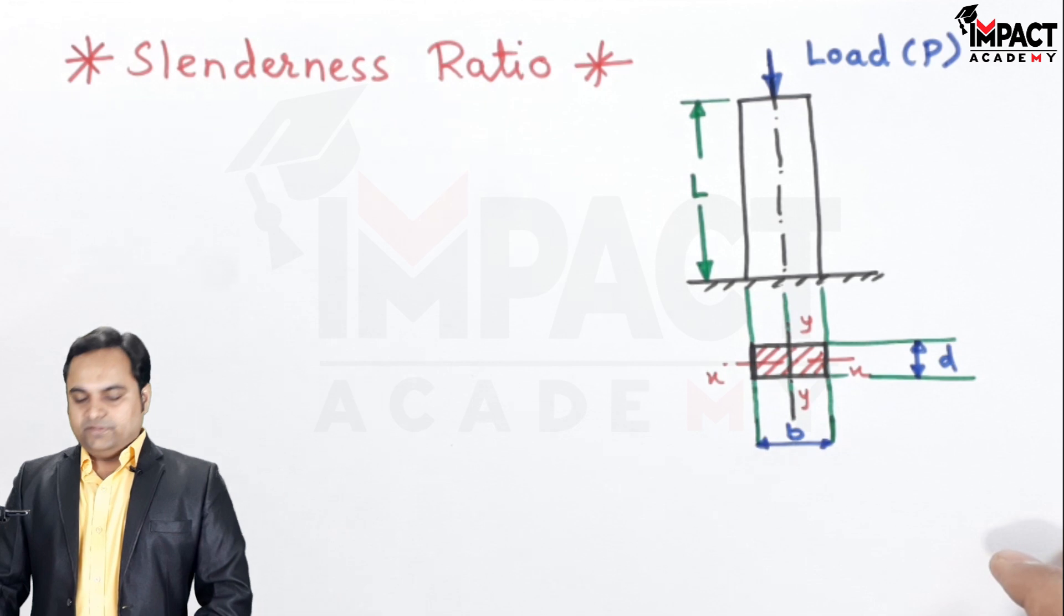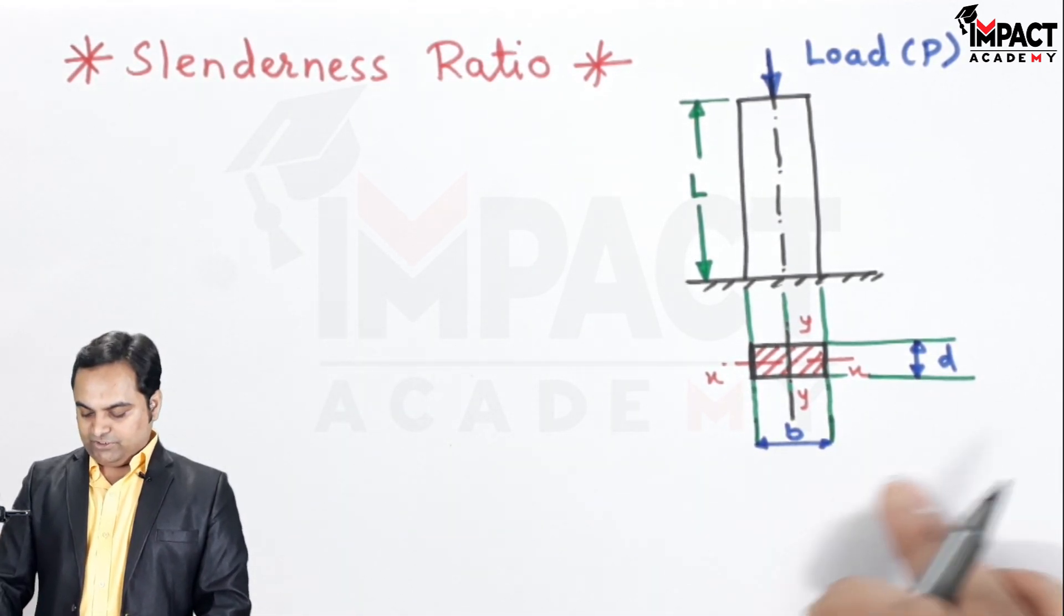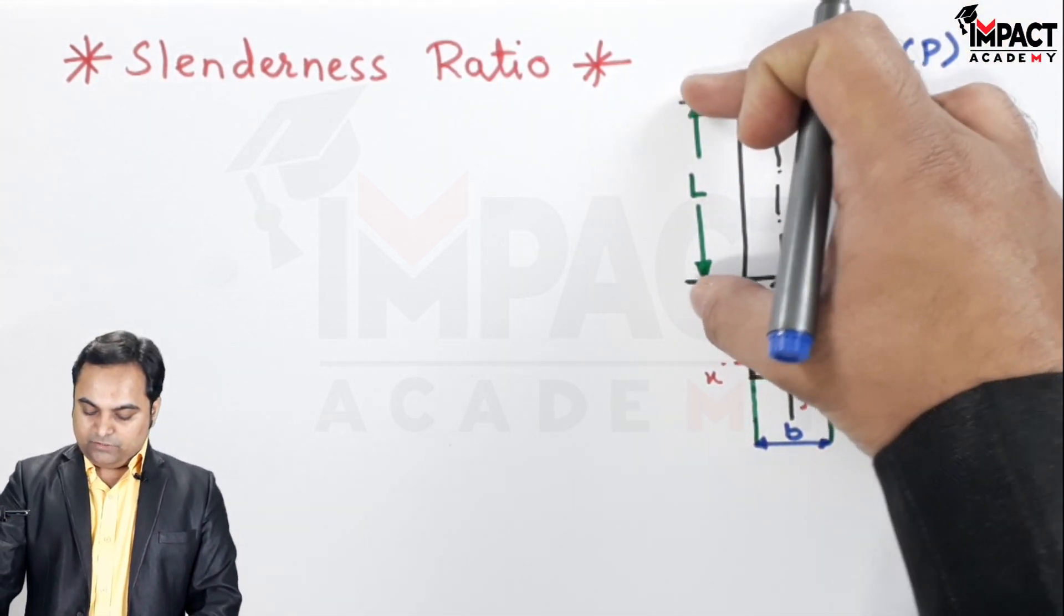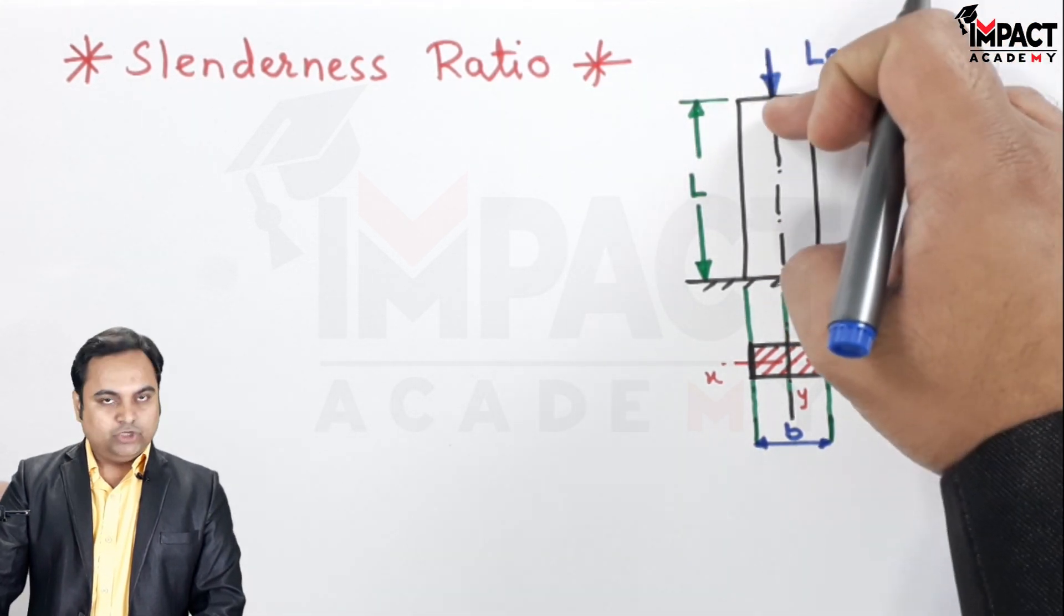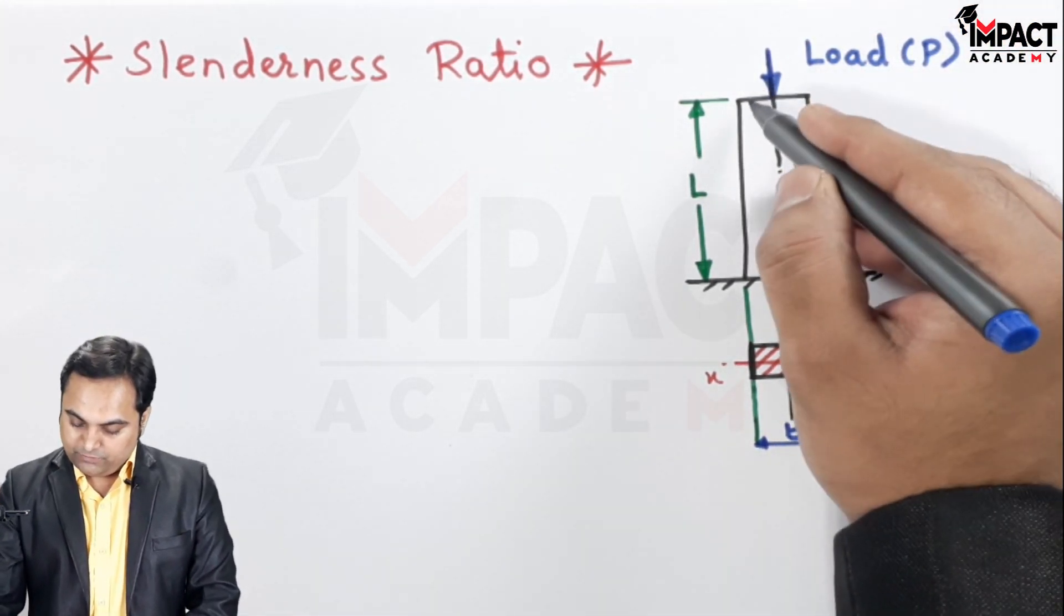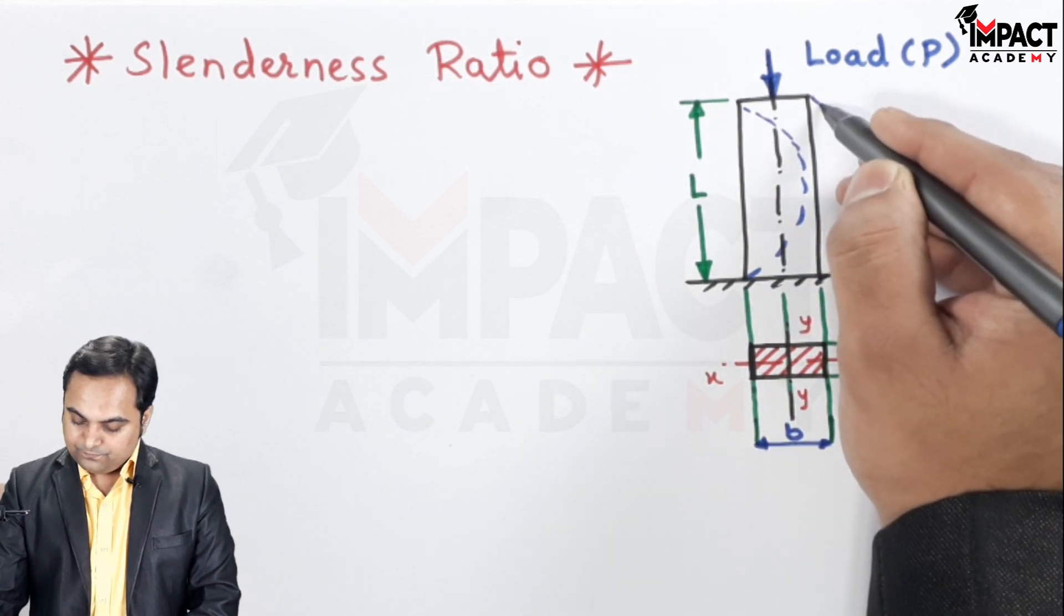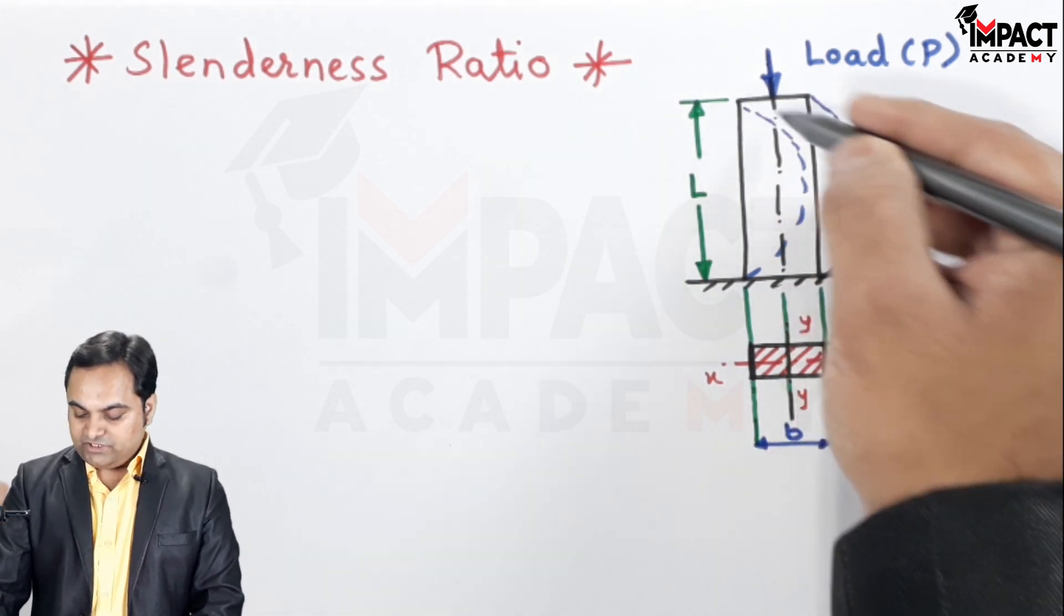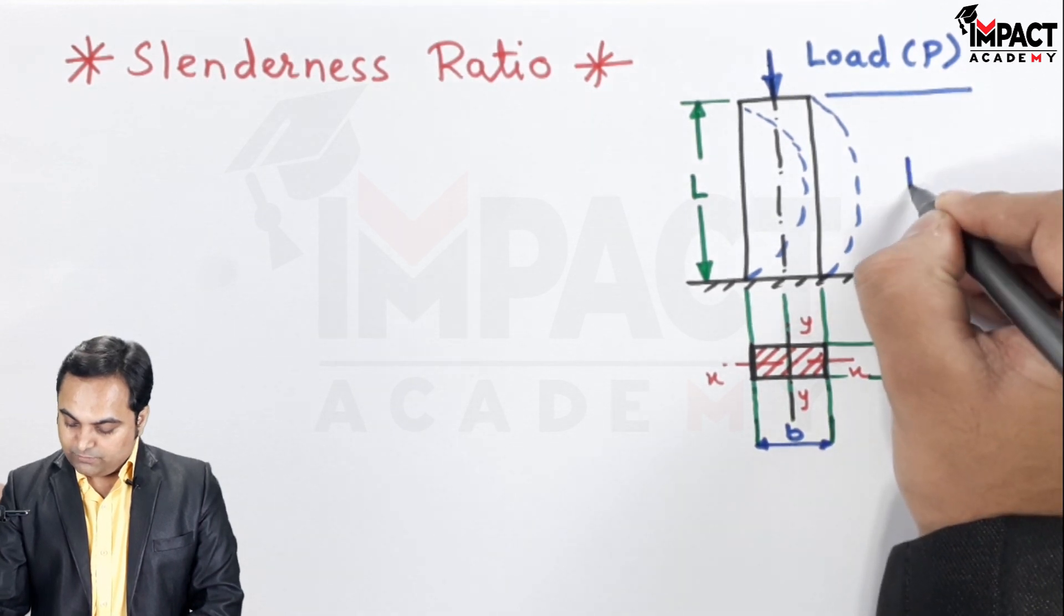Now here there is a diagram of a column which is rectangular in cross-section, as can be seen over here, having width B and depth D. The length of the column is capital L. Under the action of the axial load, which is load P, the column is going to buckle, and the length of the column which is bending is called the effective length of the column.